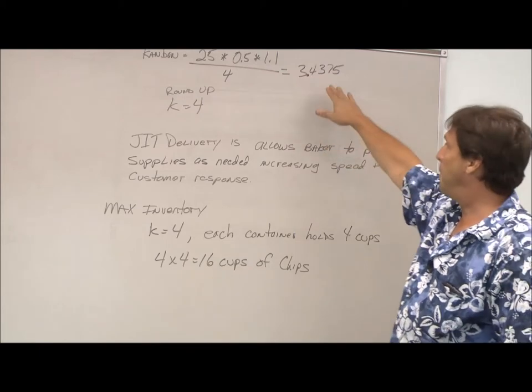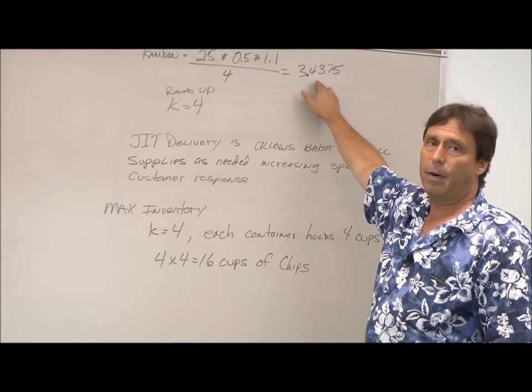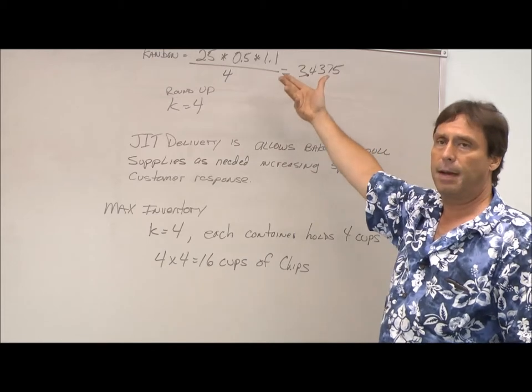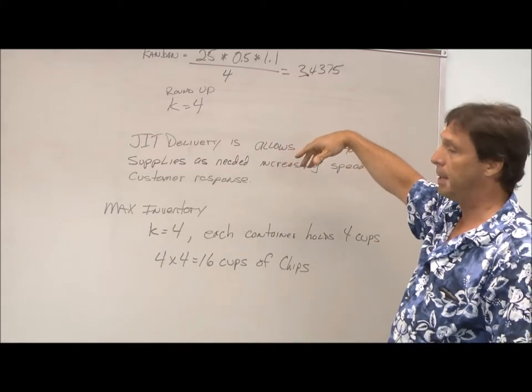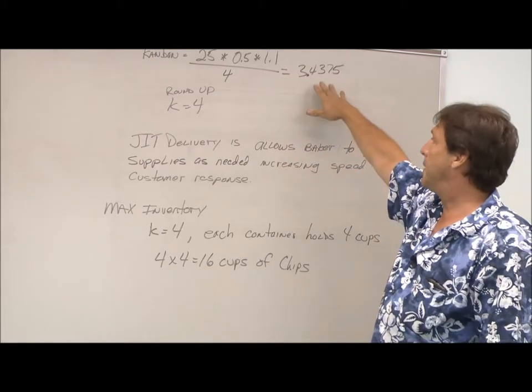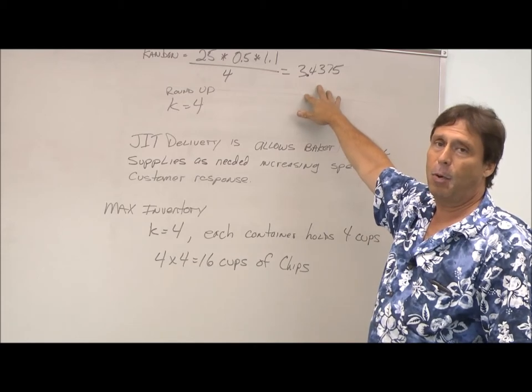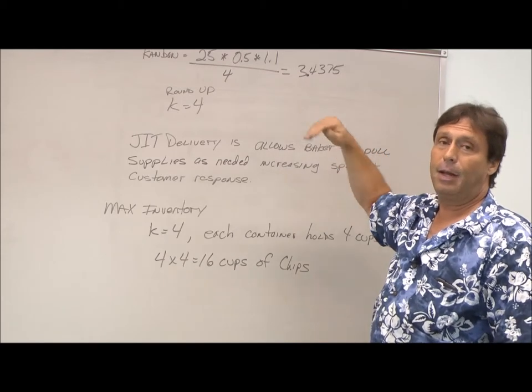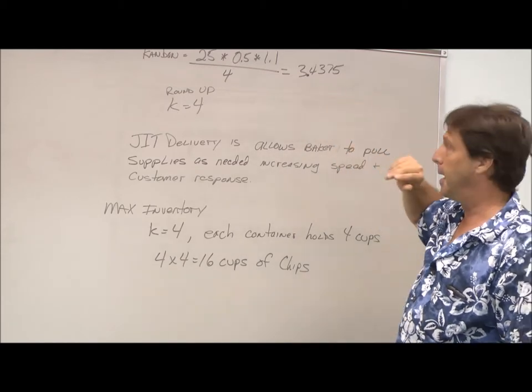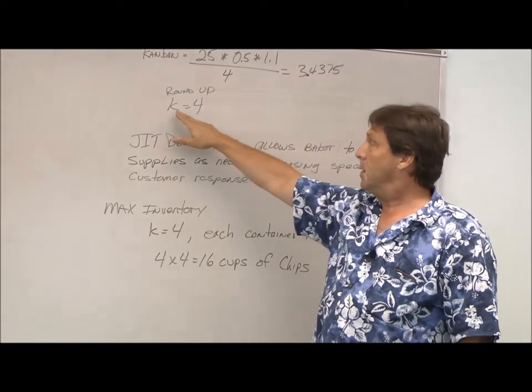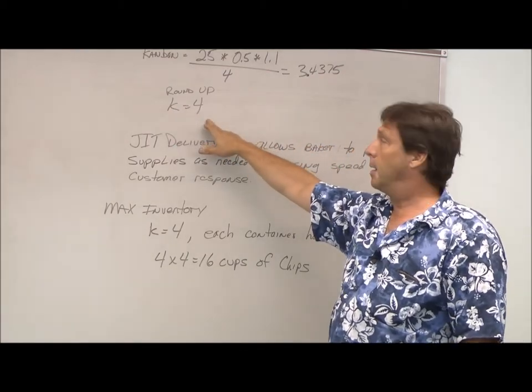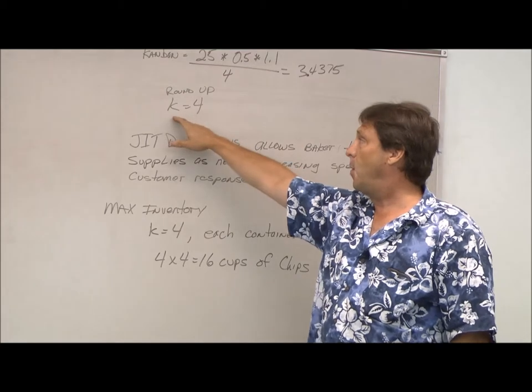Since we can't make 0.4 of anything, we round up to the next number. That's a real-world limitation. Because you can't make - it's kind of like 2.5 kids. You either have two kids or three kids. You can't have half a kid. So we round up to the next number. So our Kanban cards are four.